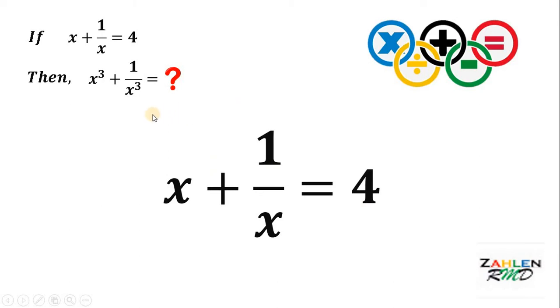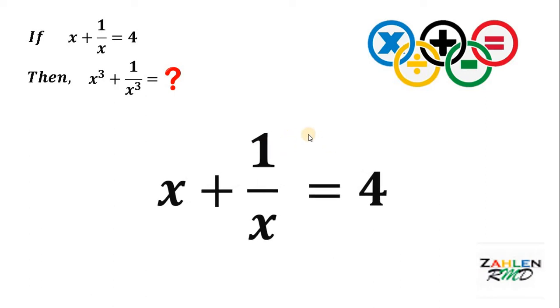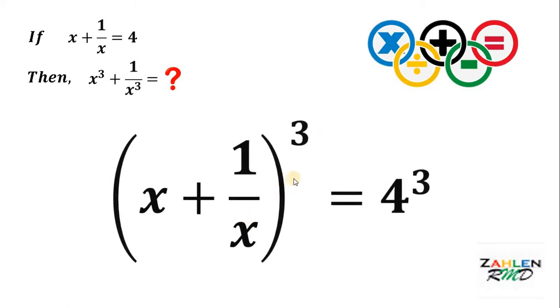Take note that our goal here is to solve for the value of x cubed plus 1 over x cubed. Therefore, the obvious thing to do is to cube this equation on both sides. So, we have x plus 1 over x cubed equals 4 cubed.